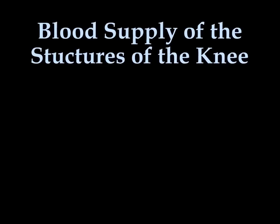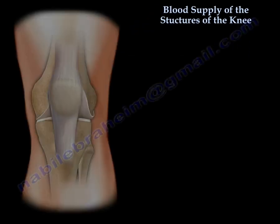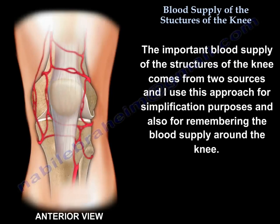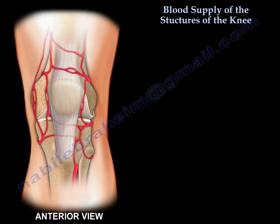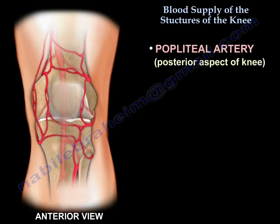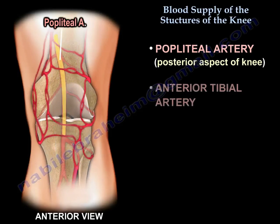The blood supply of the structures of the knee comes from two sources. For simplification and to aid memory, the first source is the popliteal artery itself, and the second source is the anterior tibial artery.